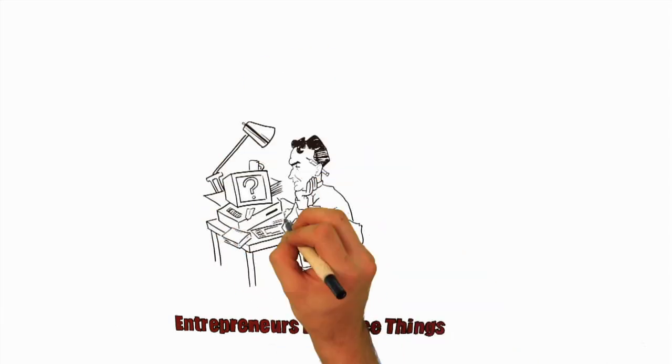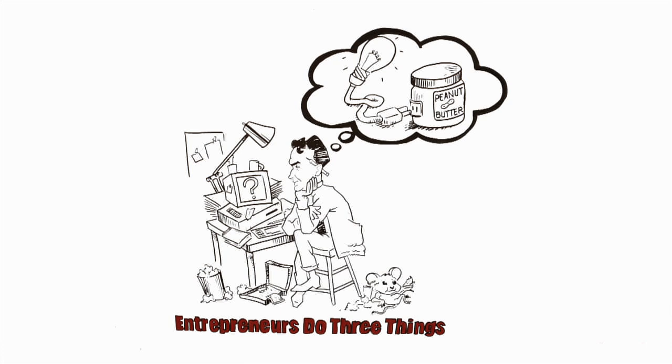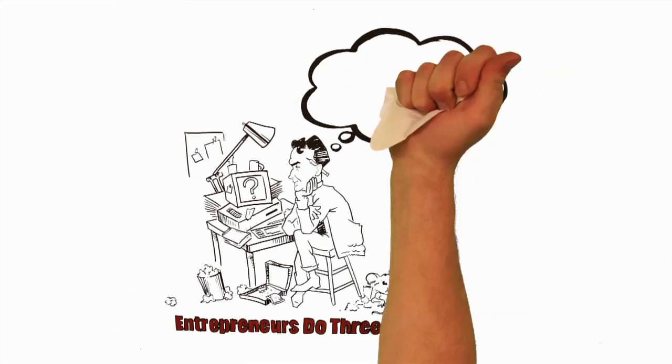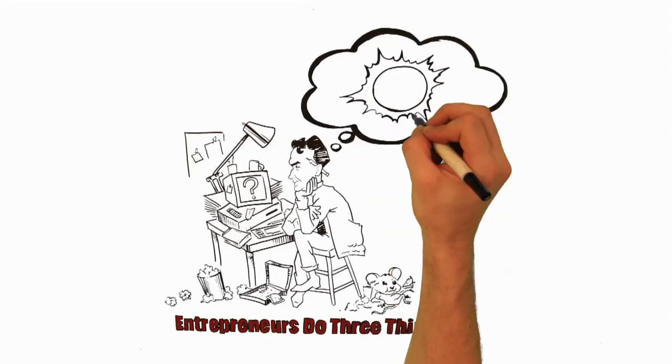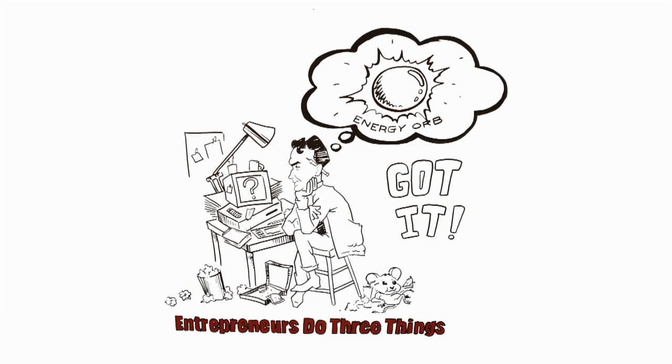Entrepreneurs do three things. They birth the new in a simple way. That is to say, every type of innovation we have has largely come from people thinking innovatively, and most of them come from firms that were created to bring forth this new technology that the inventor or entrepreneur thought up.